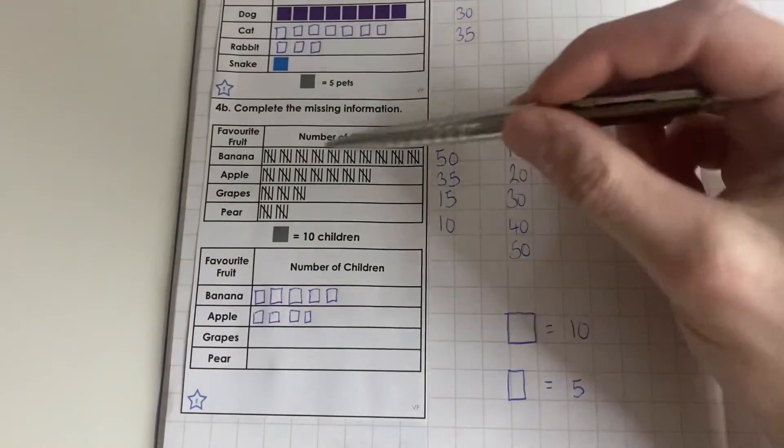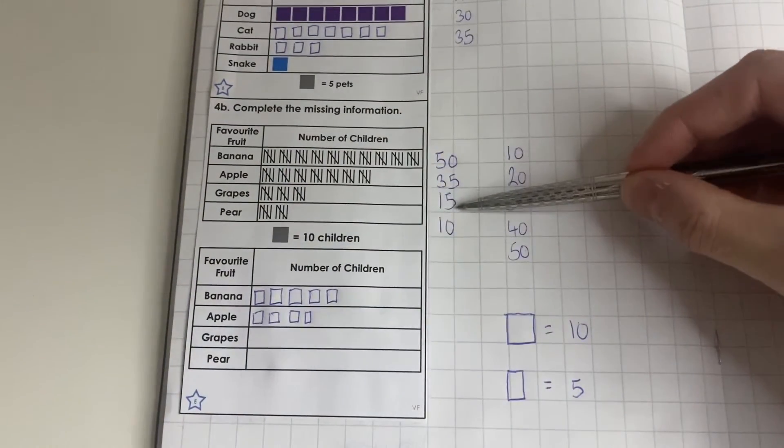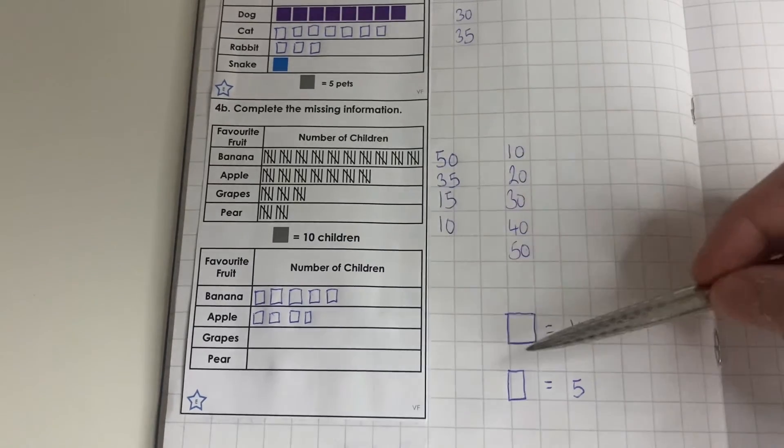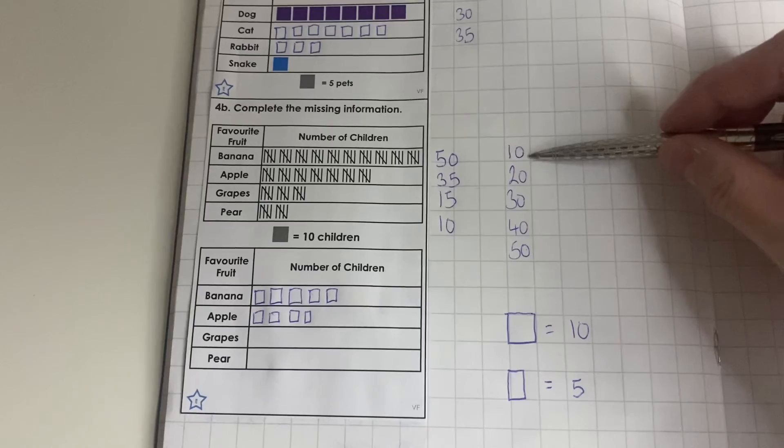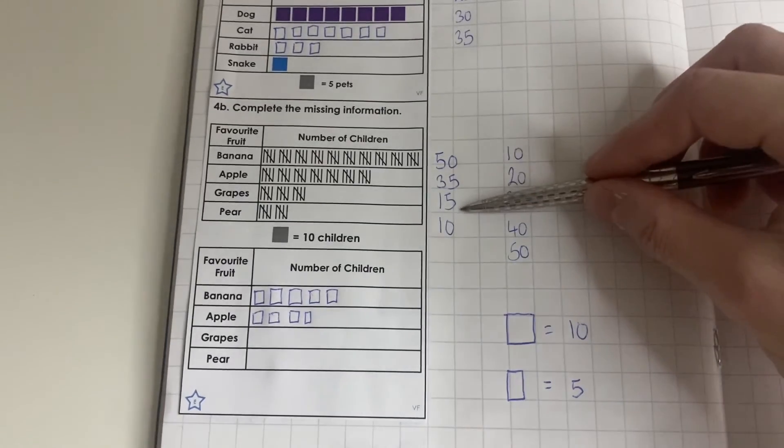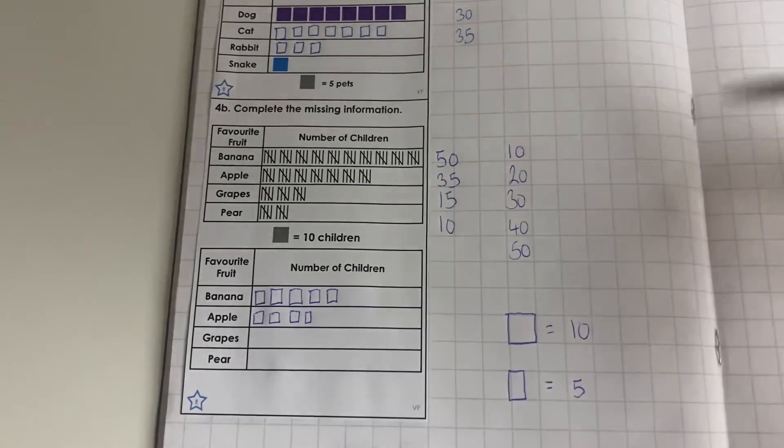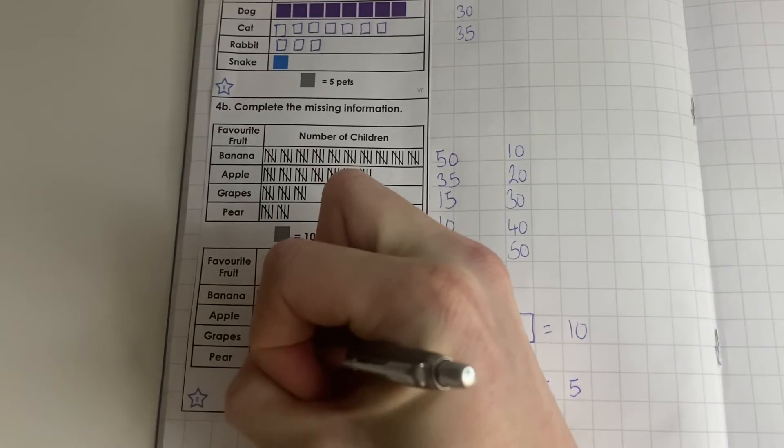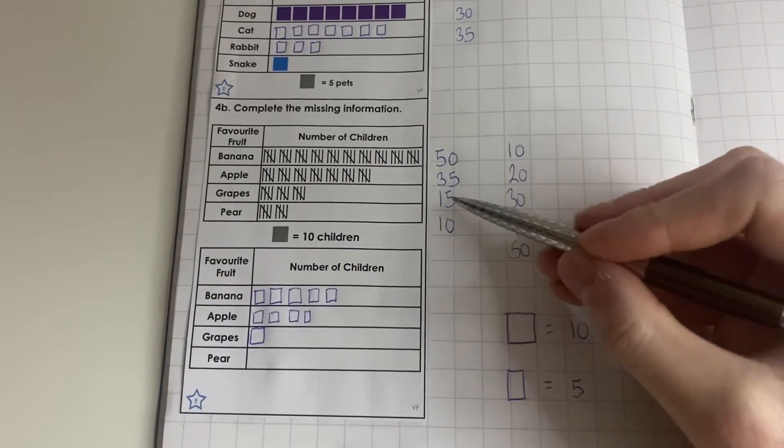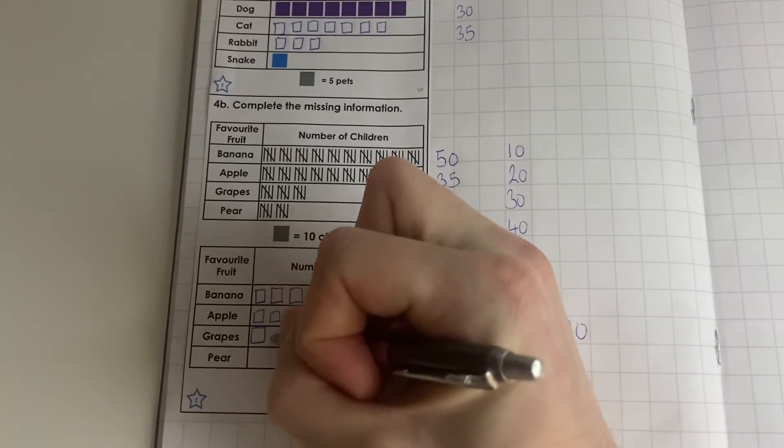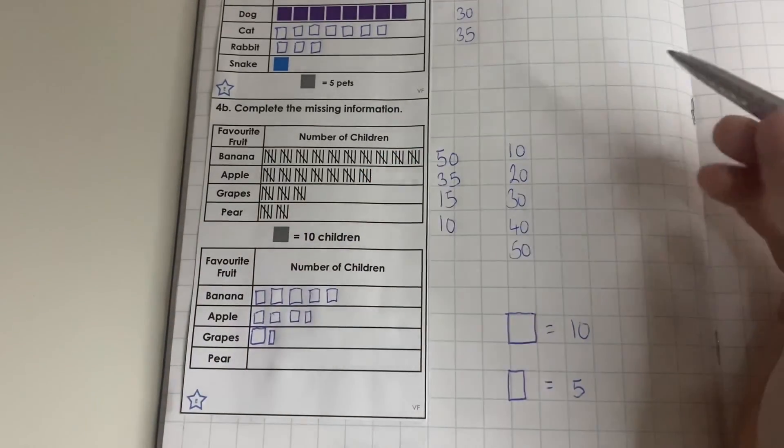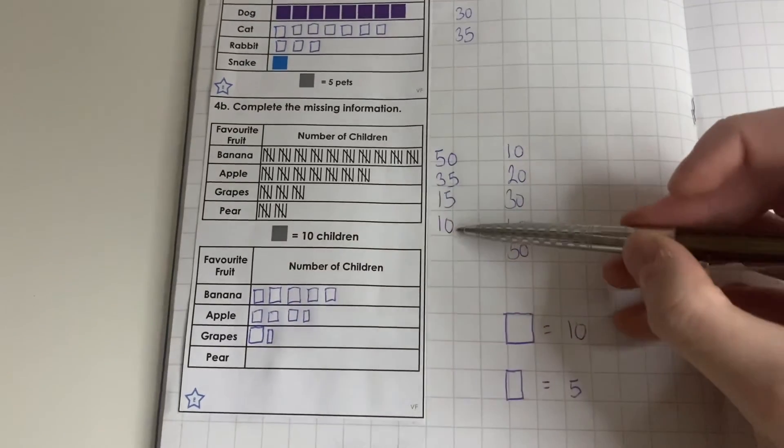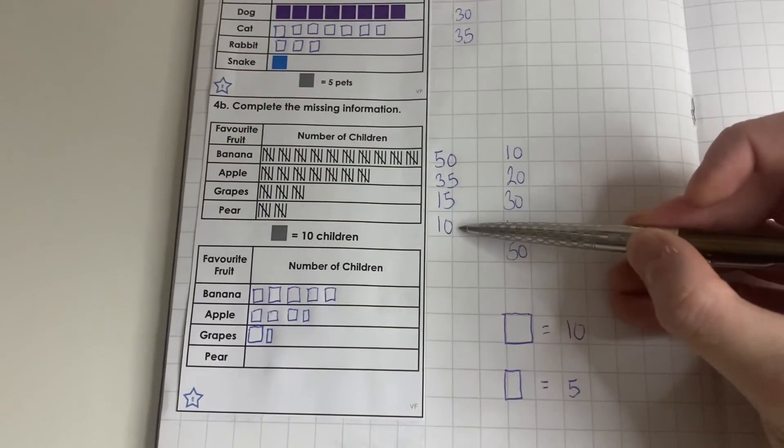We're going to now look at grapes. Again, as we can see, we've got a number here that ends in 5, so we're going to have to use the same technique that we just did with apple. We've got 10 of our 15, so we can draw 1 whole square. And then for the 5 that is remaining, we must draw half a square which is going to be a rectangle like that.